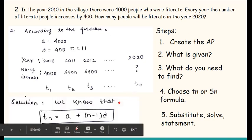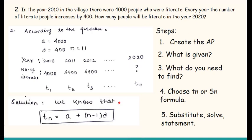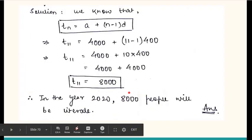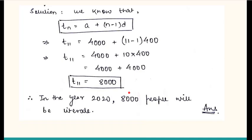So yes, what we are going to do is use the TN formula here. Substitute the values and check what answer you are getting. When we solve it, we get that in the year 2020, there will be 8000 people who will be literate. It is increasing 400 every year, and it reaches 2020, which is the 11th year of our AP, when 8000 people will be literate.